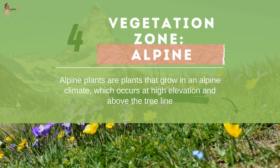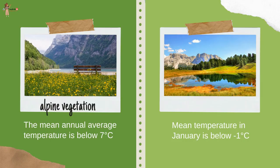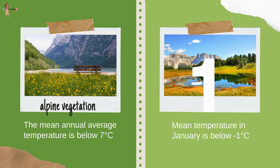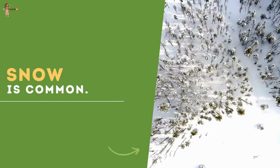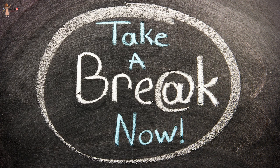Alpine plants grow in alpine climates, which occur at high elevation above the tree line. The mean annual average temperature is below 7 degrees Celsius and the mean January temperature is below -1 degree Celsius — snow is common.